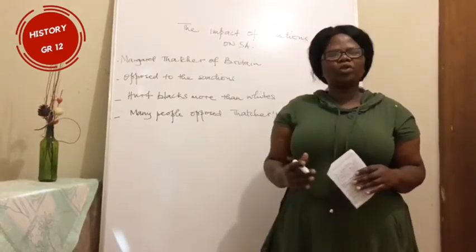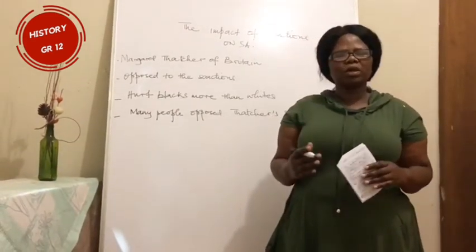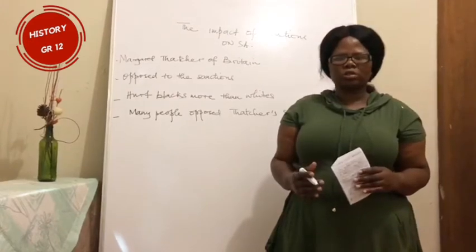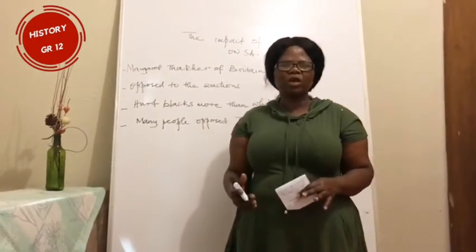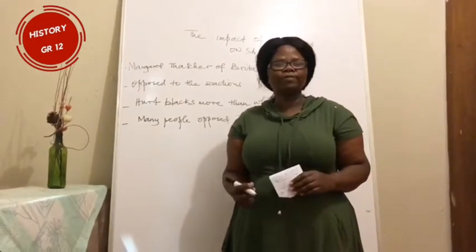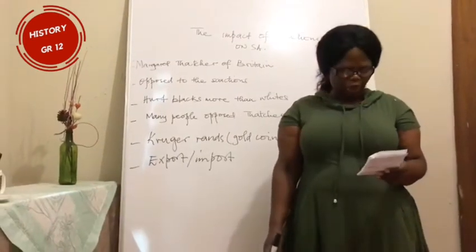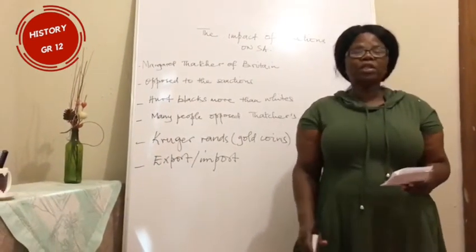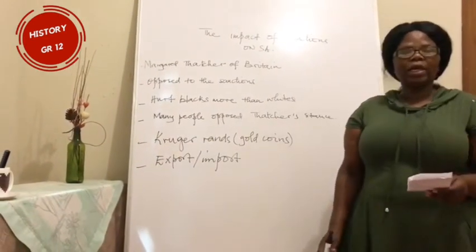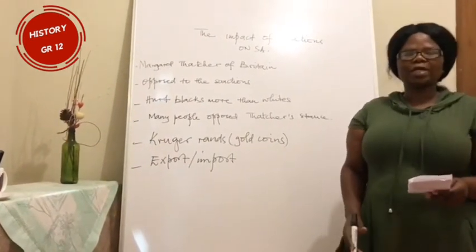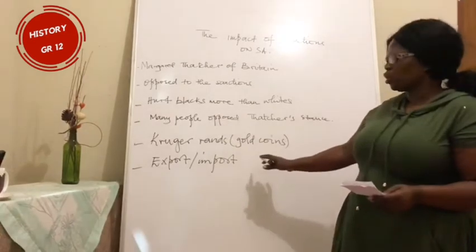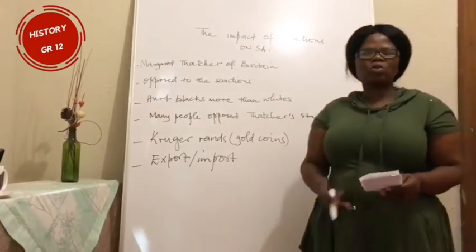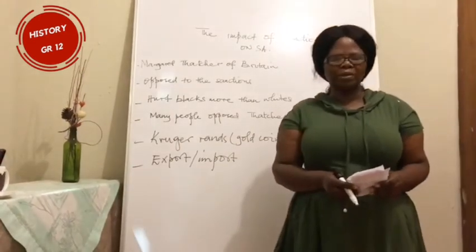What were those sanctions? The export of arms to South Africa was banned. The import of iron, steel, and Krugerrands — which are the gold coins — was also banned.